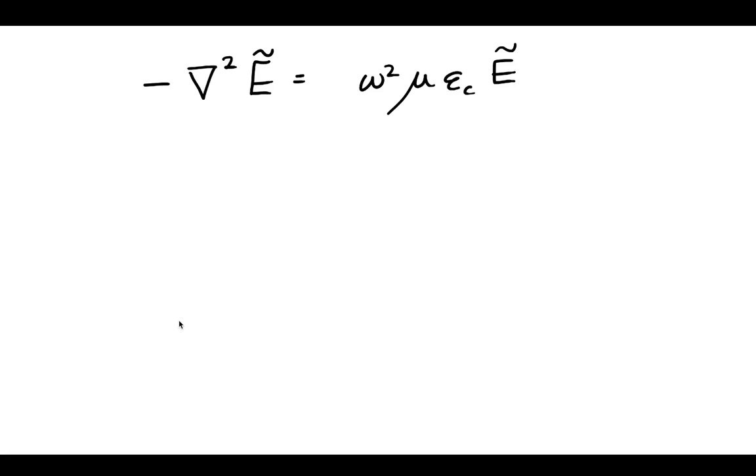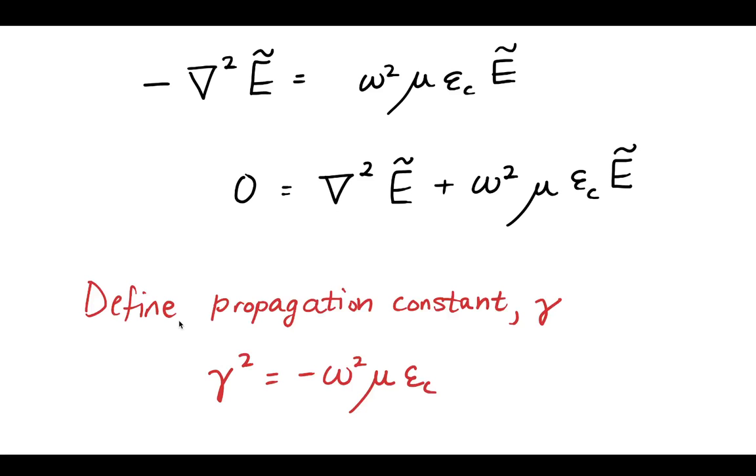Great, so this is getting quite a bit more simple. Let's move everything over to the right-hand side. Now, we are going to see that this comes up so often that we're just going to call it something. We're going to give it a special variable name, and that special variable name is the propagation constant. And we will define it like this.